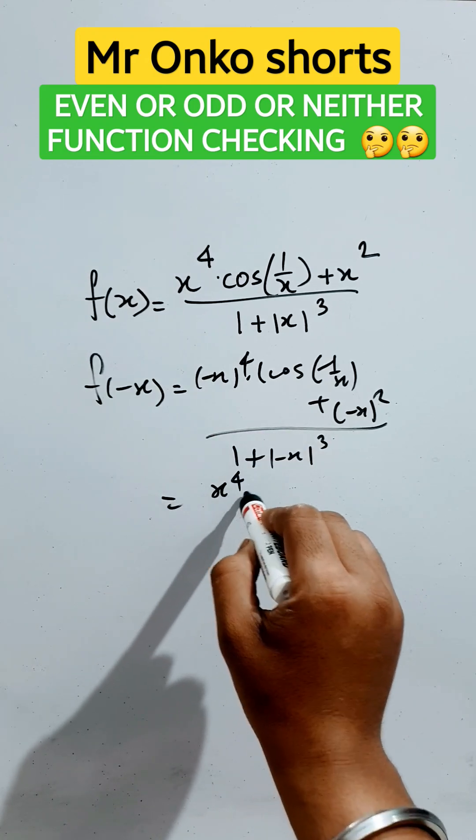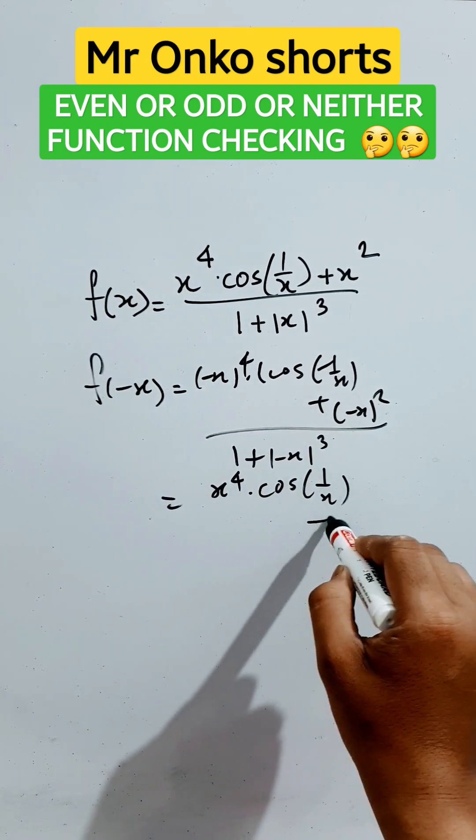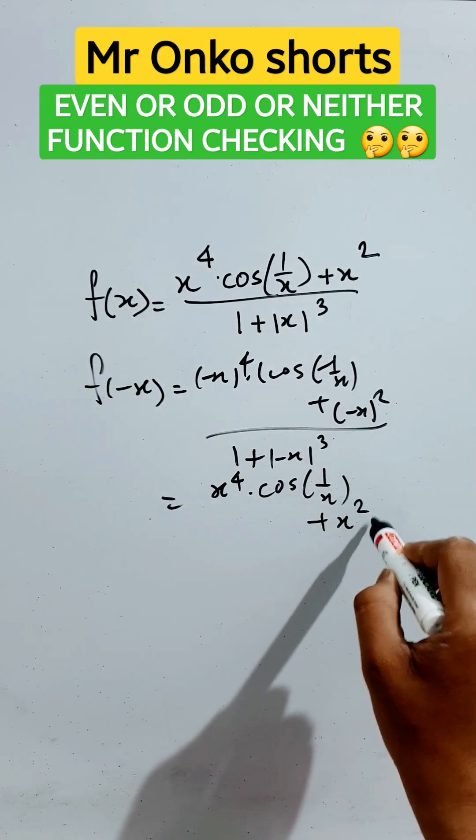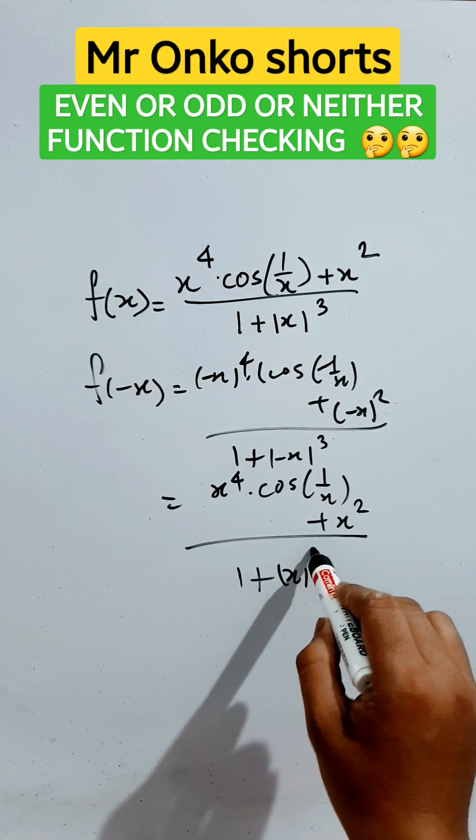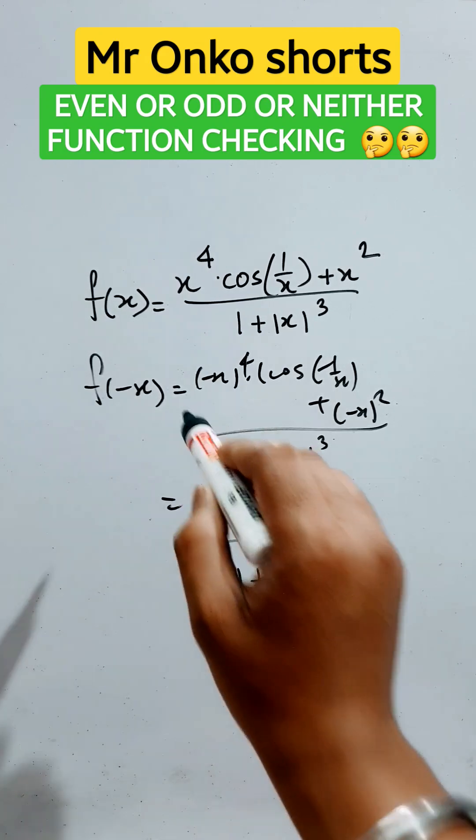So x to the 4 is positive, cosine will consume the negative sign. It is also positive, and then mod will consume the negative. So it equals f(x), so it is an even function.